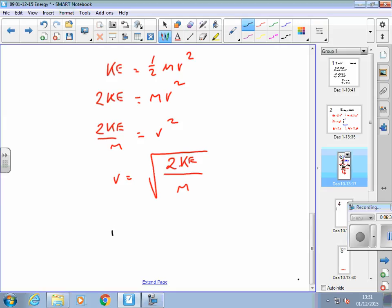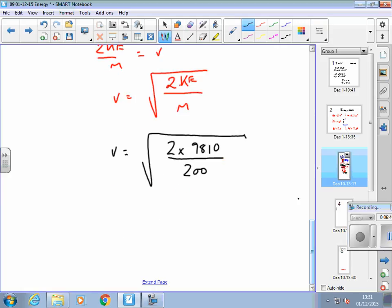V equals the square root of 2 times the kinetic energy, which is 9,810, over the mass, which is 200. And I would do that in one hit on the calculator. So I'd hit the square root button, the fraction button, and then put those values in and then round my answer.